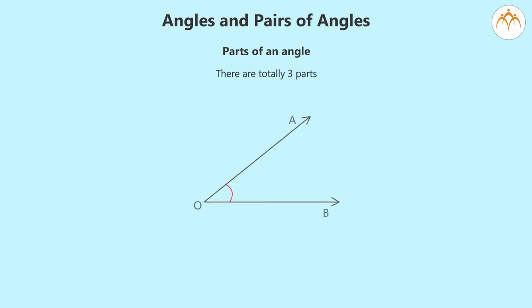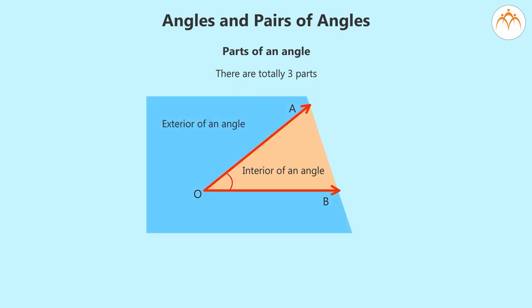Parts of an angle. There are total three parts. Interior of an angle. Exterior of an angle. The surface of an angle.